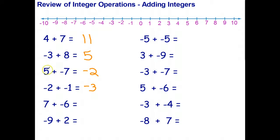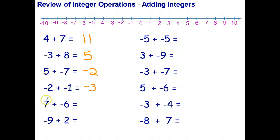You can think of adding as starting on the number line and then moving to the right if you're adding a positive, or moving to the left if you're adding a negative. For this one, starting at five and adding negative seven, I go back five to zero and then back another two. But I personally like to just think of money and bills.